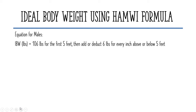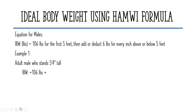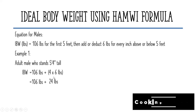Let's have our first example: an adult male who stands 5 feet and 4 inches tall. The equation says 106 pounds for the first 5 feet. Since his height has an excess of 4 inches, we multiply 4 inches by 6 pounds. That gives us 24 pounds.